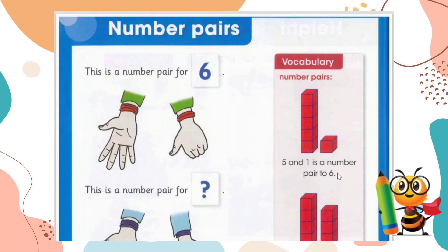Hi, welcome back to my channel Study Week. Today we are going to learn our new topic of maths — number pairs. To understand number pairs, first we need to understand the word. Numbers are like one, two, three, four, five, six, seven, eight, nine, ten, and so on. Pairs means when two things combine and make one thing — that is known as a pair. For example, your right hand side and your left hand side combine to make one pair.